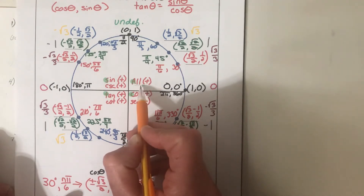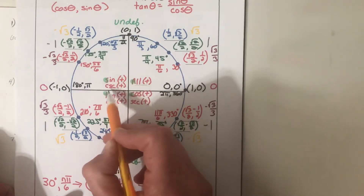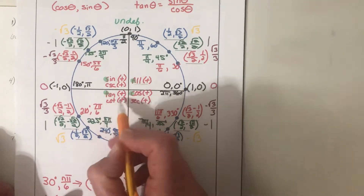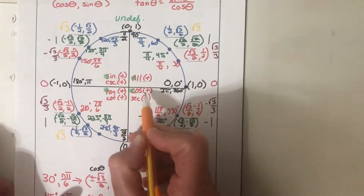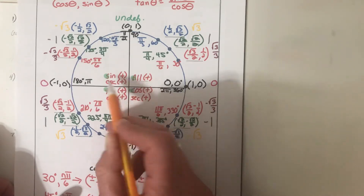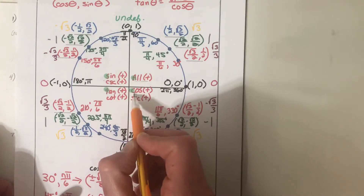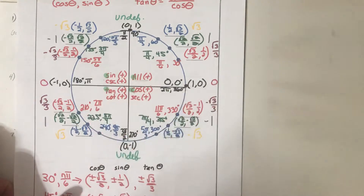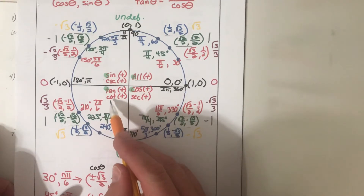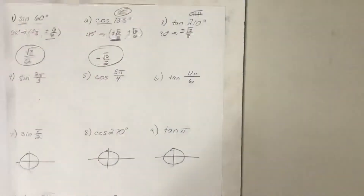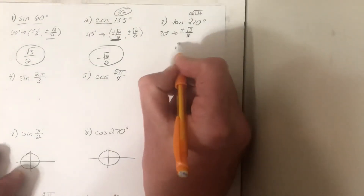Another helpful tool is the acronym ASTC: All Students Take Calculus. This signifies that all trig ratios are positive in quadrant one, sine and its reciprocal are positive in quadrant two, tangent and its reciprocal are positive in quadrant three, and cosine and its reciprocal are positive in quadrant four. So tangent is positive in quadrant three, while sine, cosecant, cosine, and secant are all negative there. Our answer is positive root three over three.